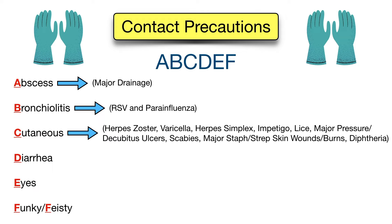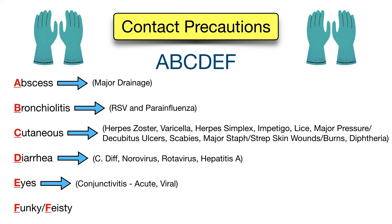The pharyngeal form of diphtheria will be coming up in droplet precautions. D is for diarrhea — the diseases that cause diarrhea and require contact precautions include C. diff, norovirus, rotavirus, and hepatitis A. E is for eyes, which helps you remember conjunctivitis — specifically infectious conjunctivitis, especially acute viral conjunctivitis, which some people refer to as pink eye.